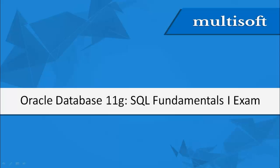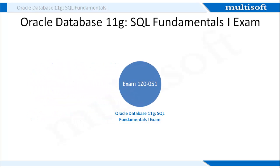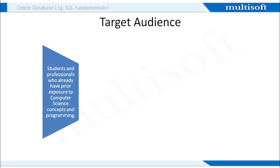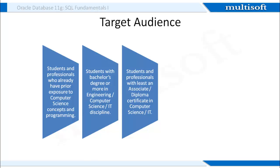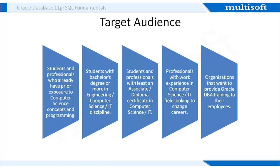Let's take a closer look at the exams to be cleared for becoming an OCA in DBA 11G. You need to appear for exams 1Z0-051 and 1Z0-052 to qualify for the OCA certification. Today we will be covering the details of the first exam, 1Z0-051. The ideal audience for this training includes students and professionals with prior exposure to computer science concepts and programming, those with a bachelor's degree or more in engineering, computer science, or IT disciplines, and professionals with work experience in IT looking to change careers, as well as organizations wanting to provide Oracle DBA training to their employees.